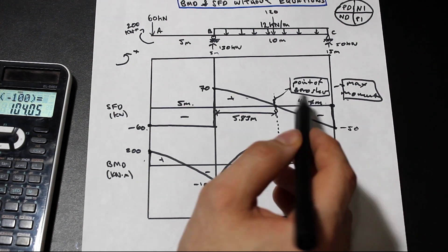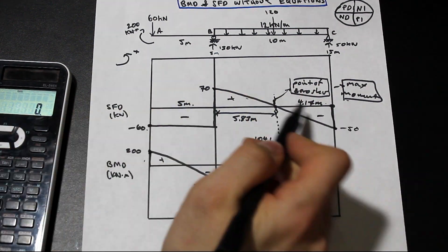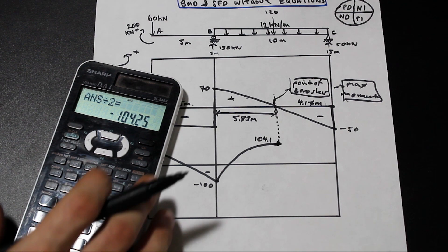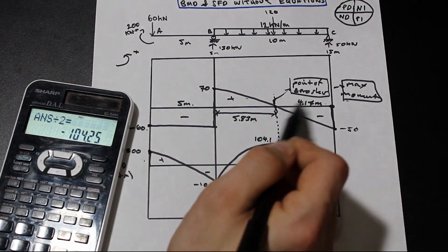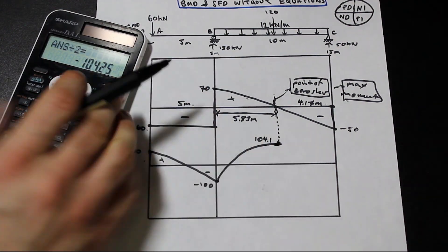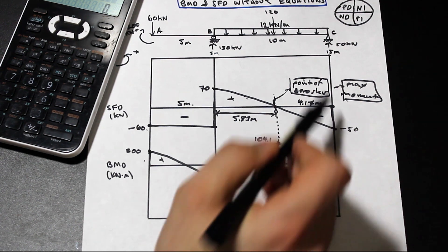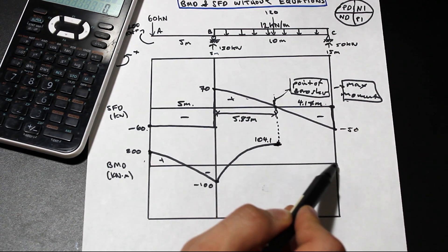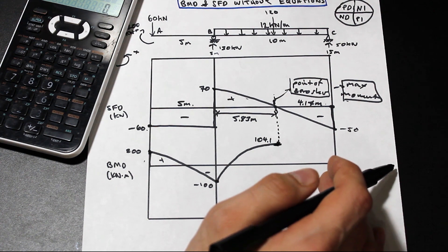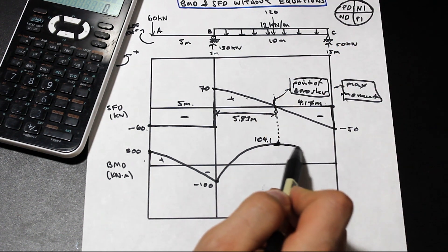Now we find the area of the negative triangle on the other side. We have 4.17 times negative 50 divided by 2. We rounded slightly so we get approximately negative 104.2, which takes us back to zero. Another important note: you do have to return to zero at the end of the bending moment diagram when you have a roller or pin support at the end. If you're not going to zero, double-check your work. The shear is increasing and negative here, so we follow this curvature and take it all the way back to zero.